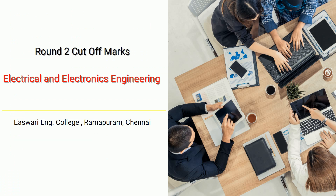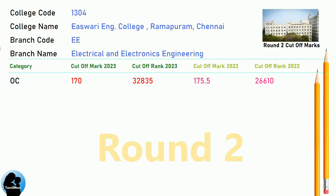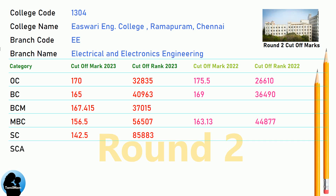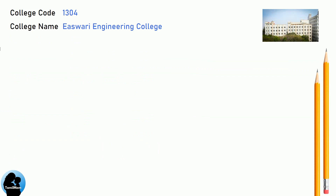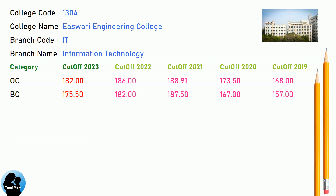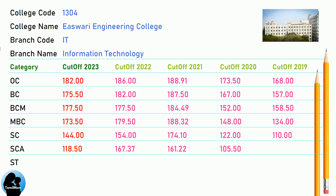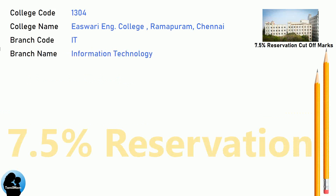DNEA Round 2 Cut-Off for Eshwari Engineering College in Electrical and Electronics Engineering. DNA Cut-Off and DNA 8.5 Reservation Cut-Off for Eshwari Engineering College in Information Technology. DNA 7.5 Reservation Cut-Off for Eshwari Engineering College in Information Technology.